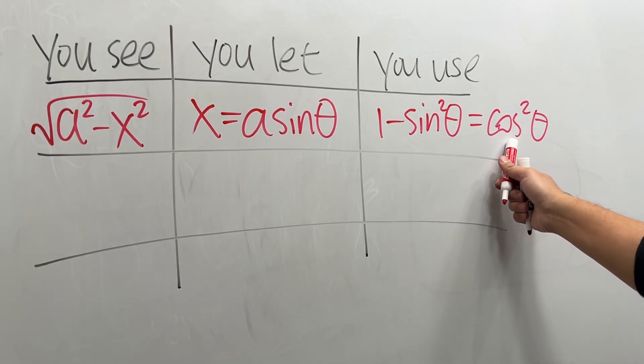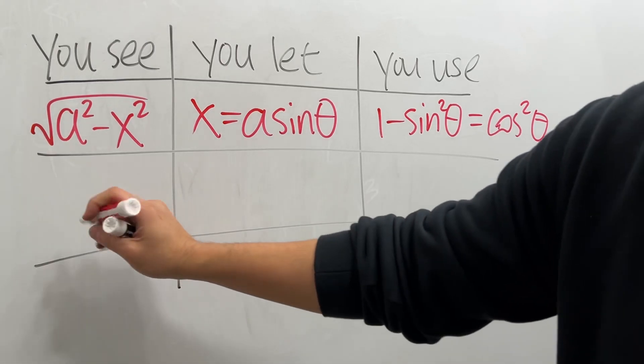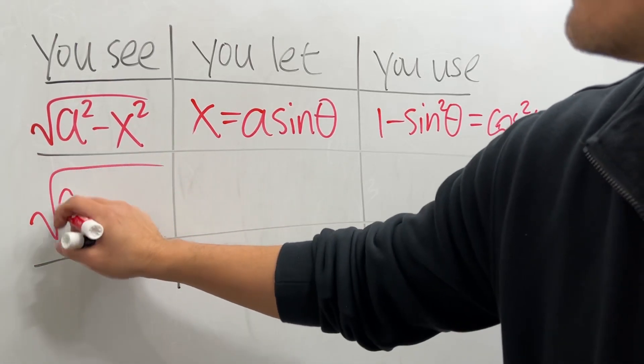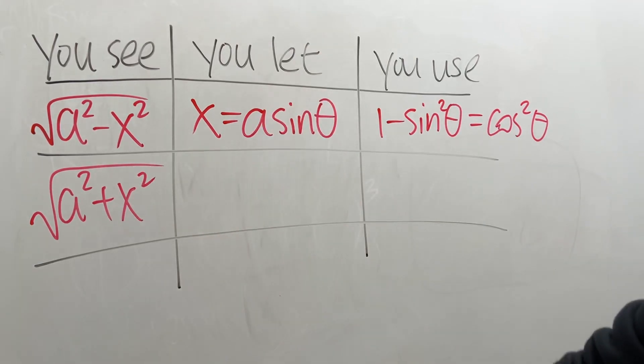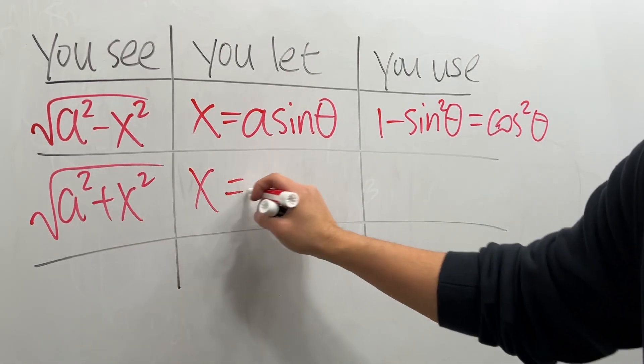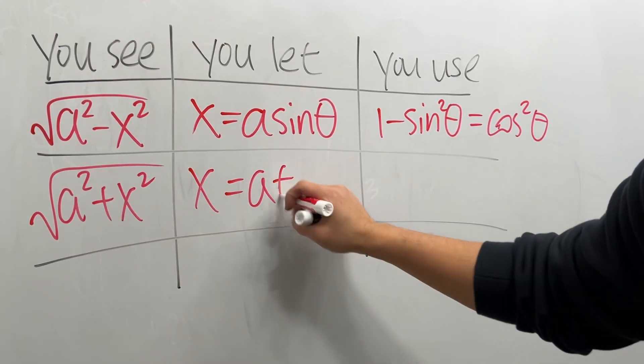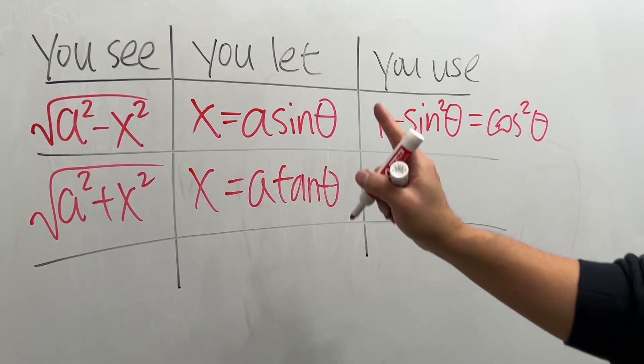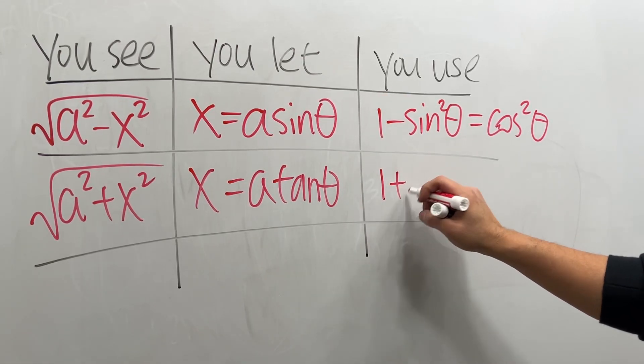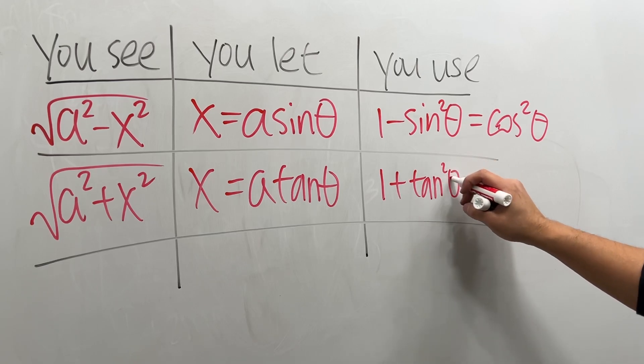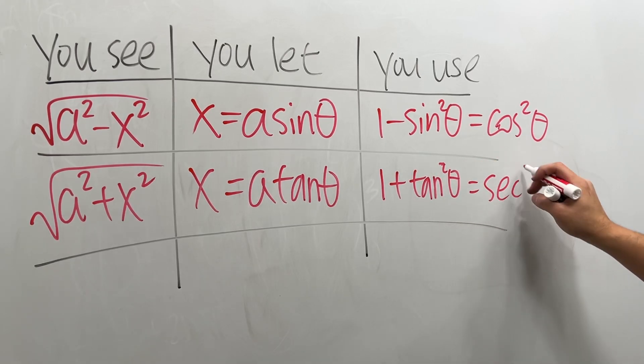So keep that in mind. All right, next, if we have square root of a squared plus x squared, in that case we let x equal a times tangent theta. And you can expect to use that 1 plus tangent squared theta will give you secant squared theta.